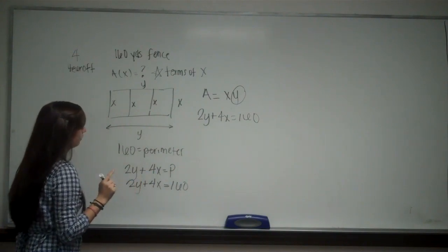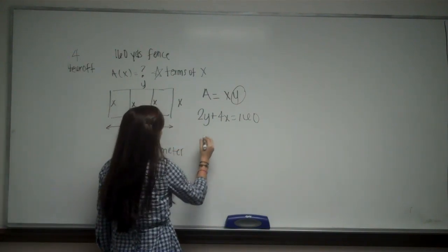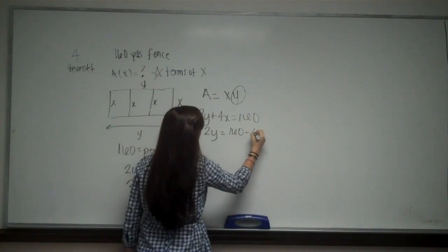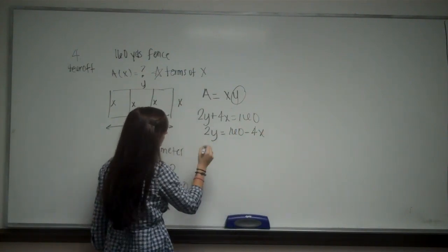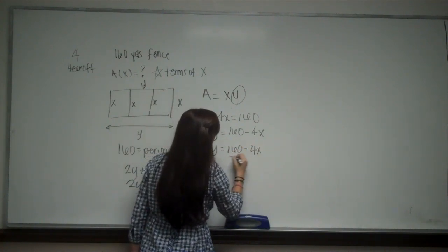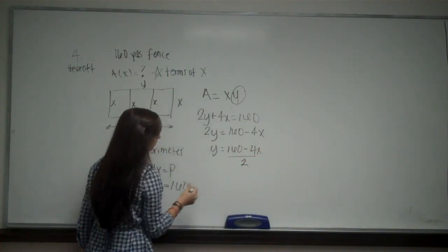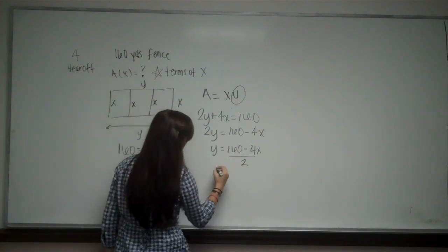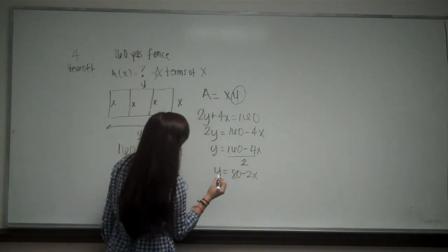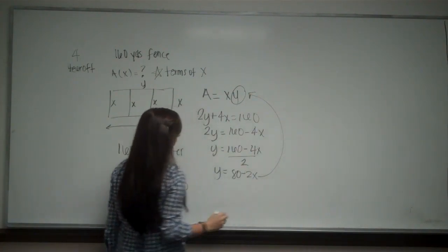So I have 2y + 4x = 160, and I'm going to solve for y. So 2y = 160 - 4x, and then I can divide by 2. Y = (160 - 4x)/2, and then I simplify that to y = 80 - 2x. So I'm going to take this and plug it into there.